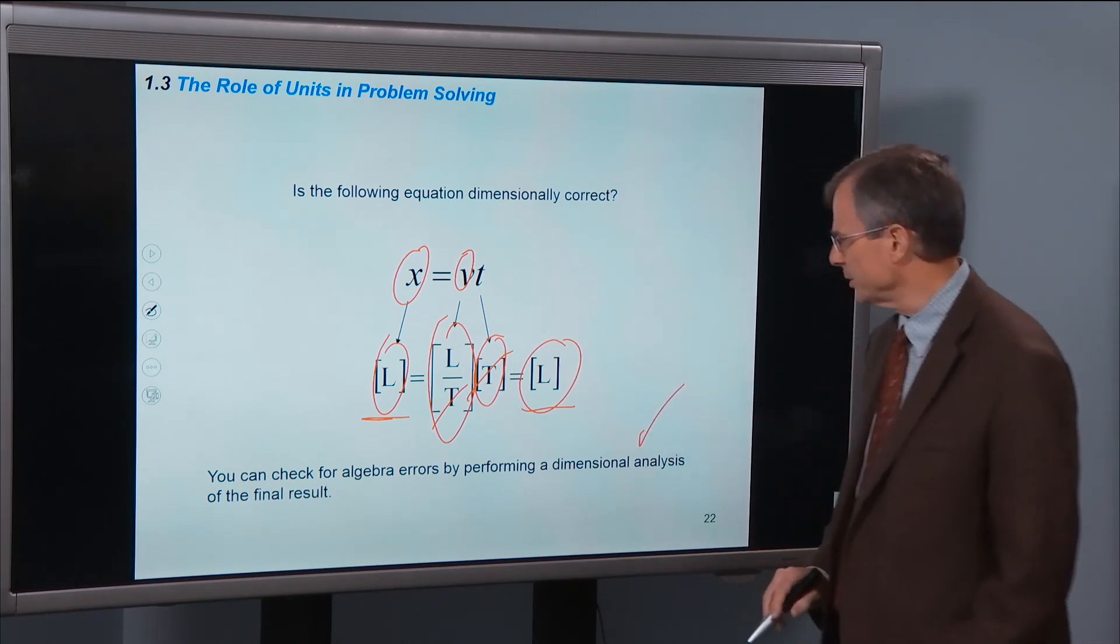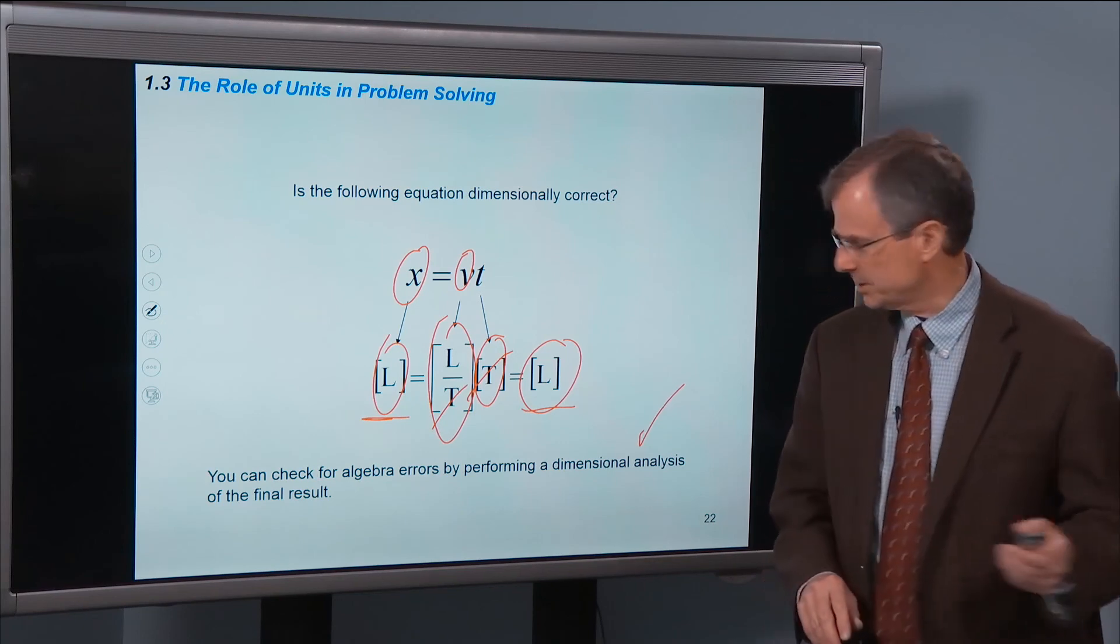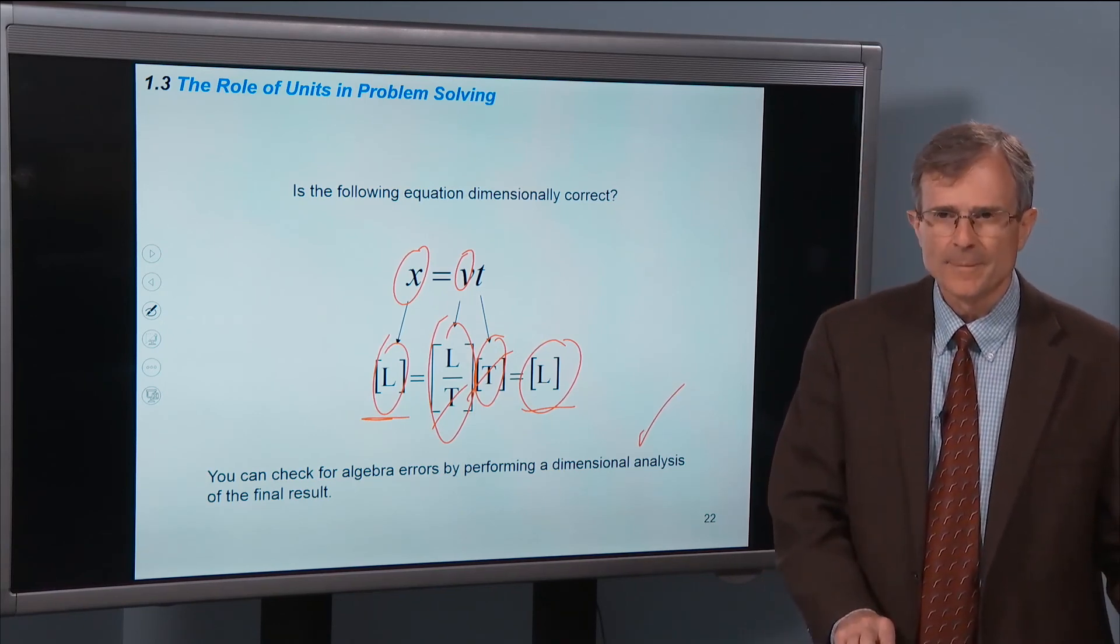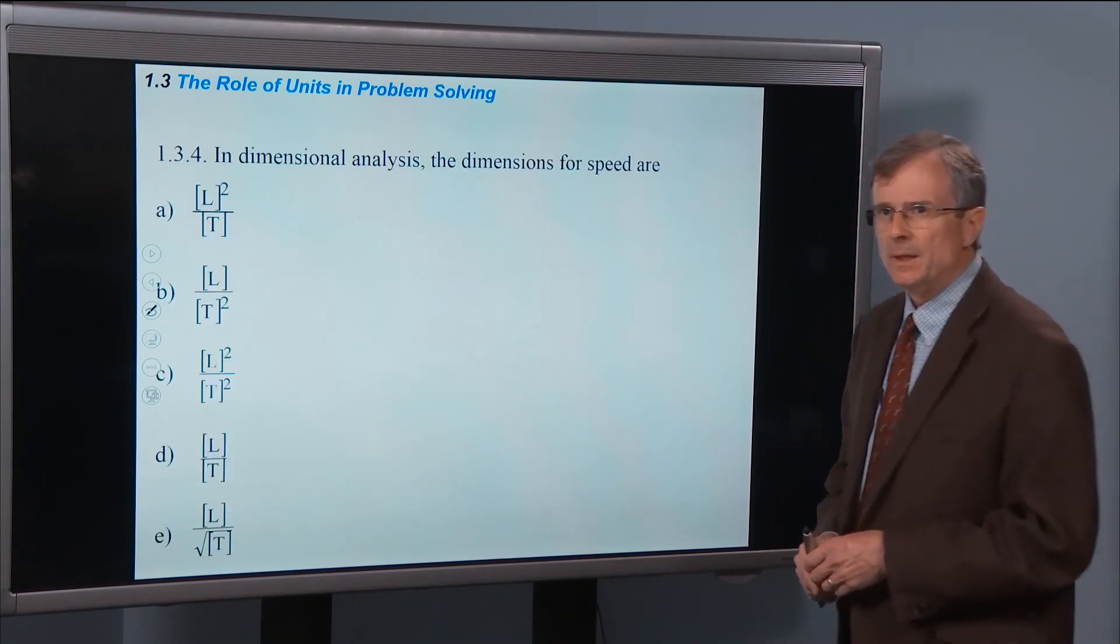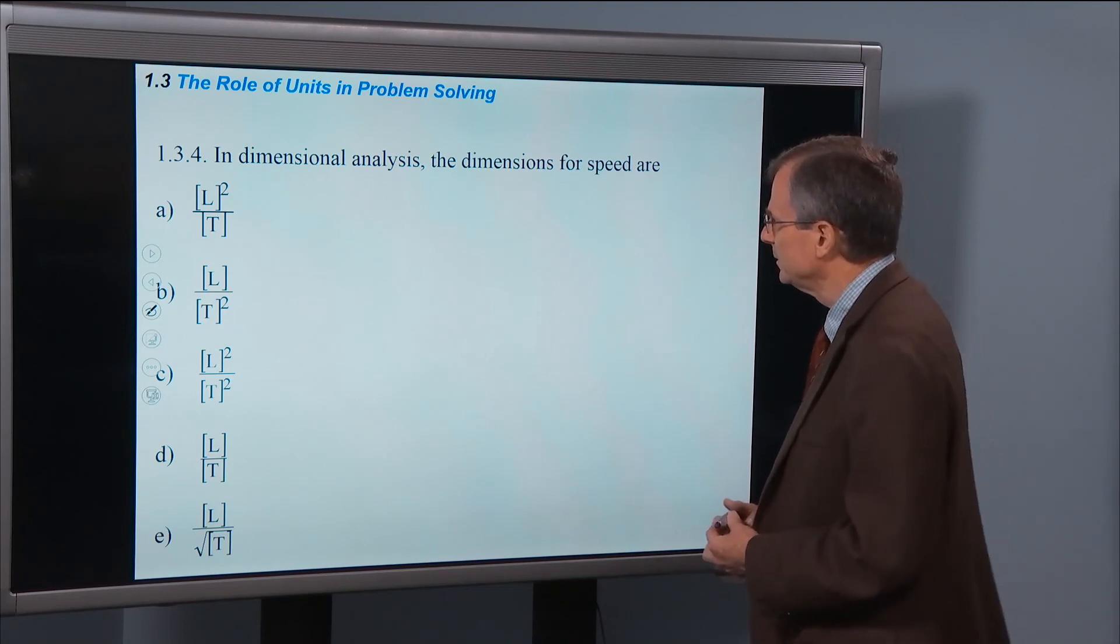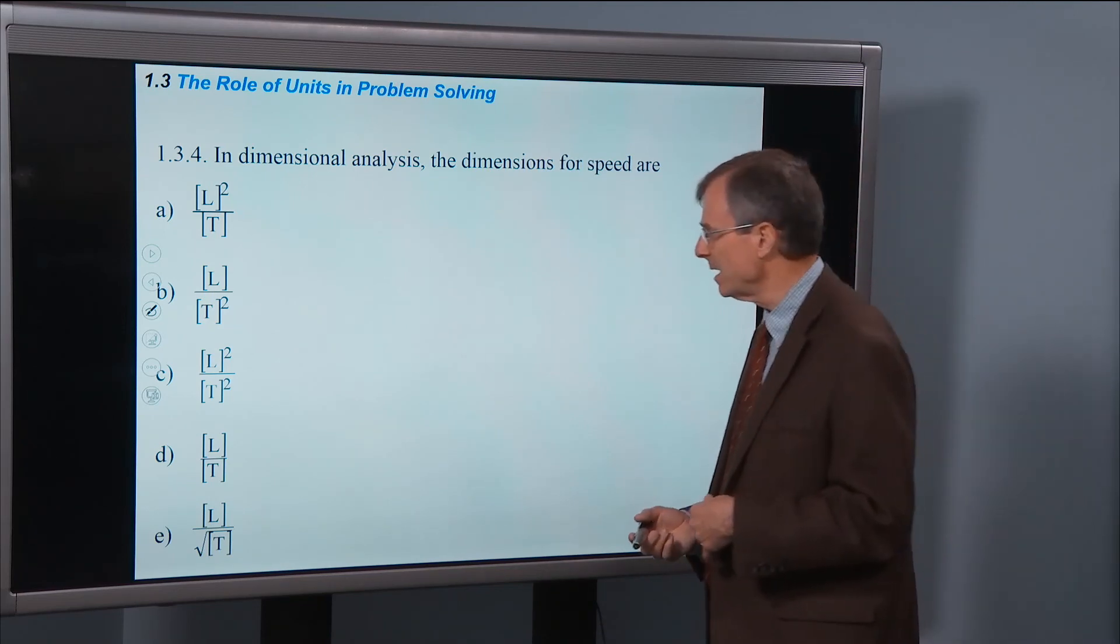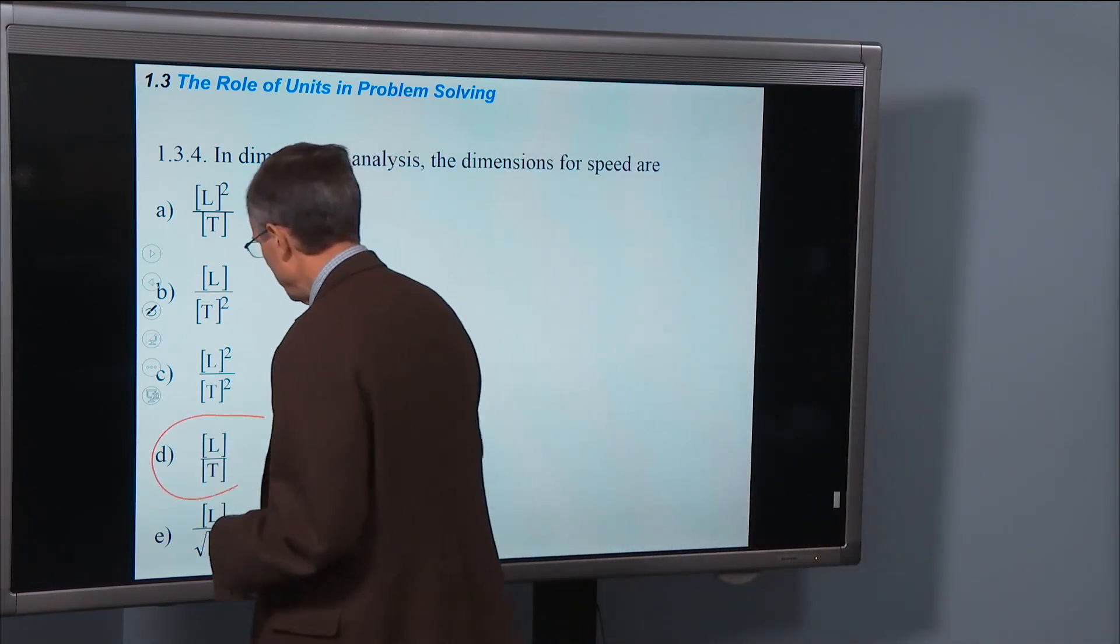Dimensions for speed - well, the speed is a length divided by time. So that's just got to be this one right here.